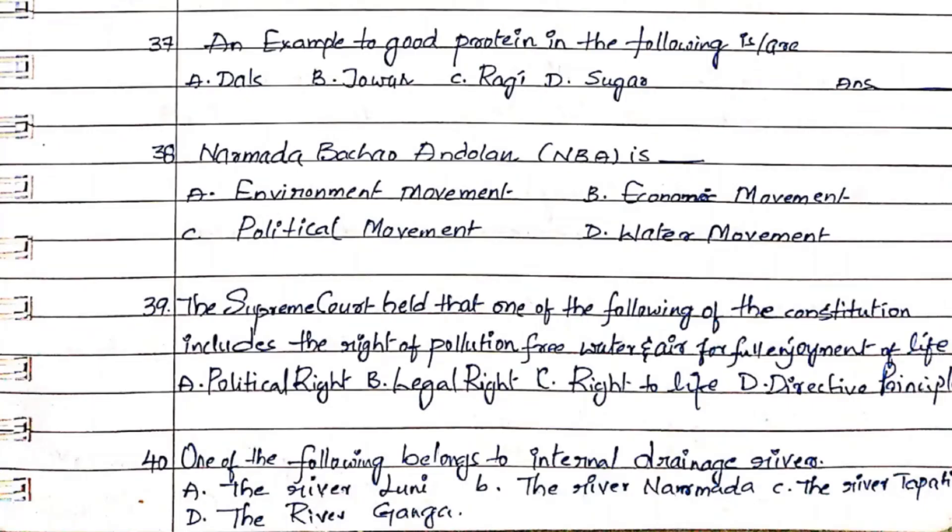Question 37: An example of good protein is. Option A. Dals, Option B. Jowar, Option C. Ragi, Option D. Sugar. The answer is Option A. Dals.